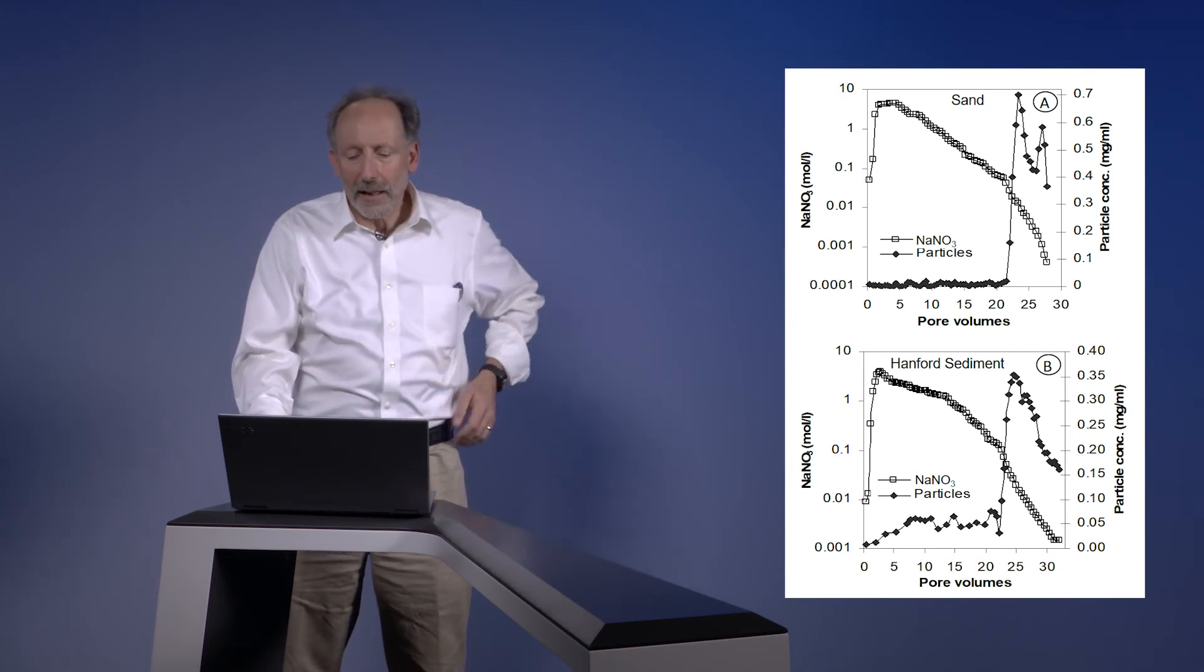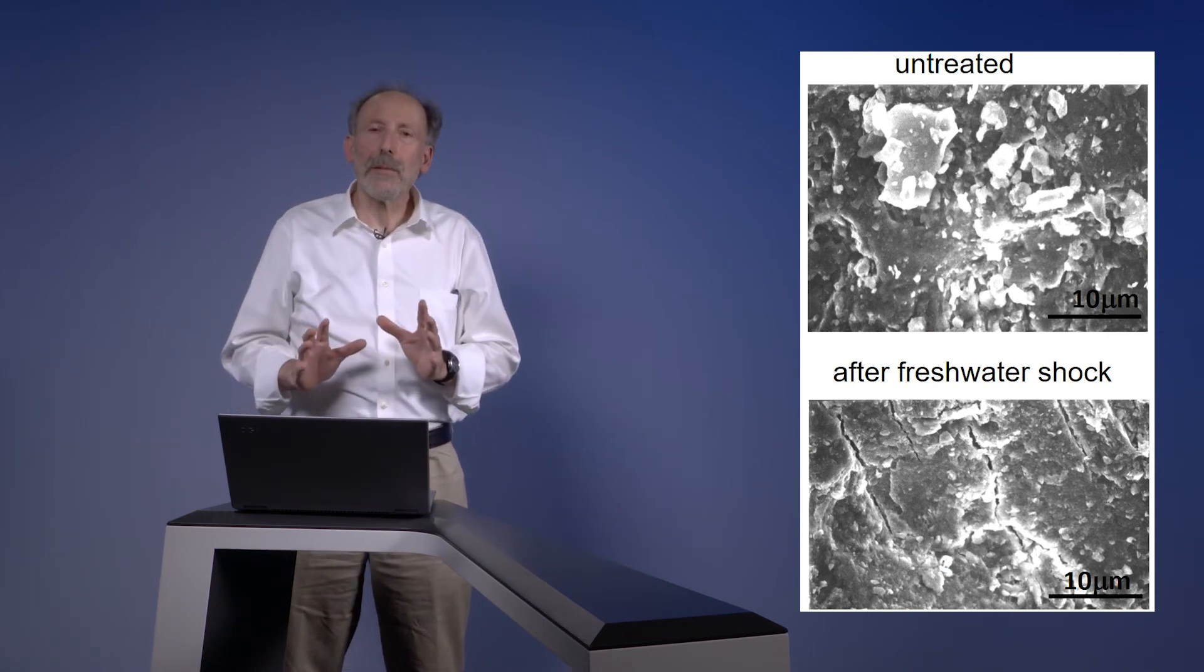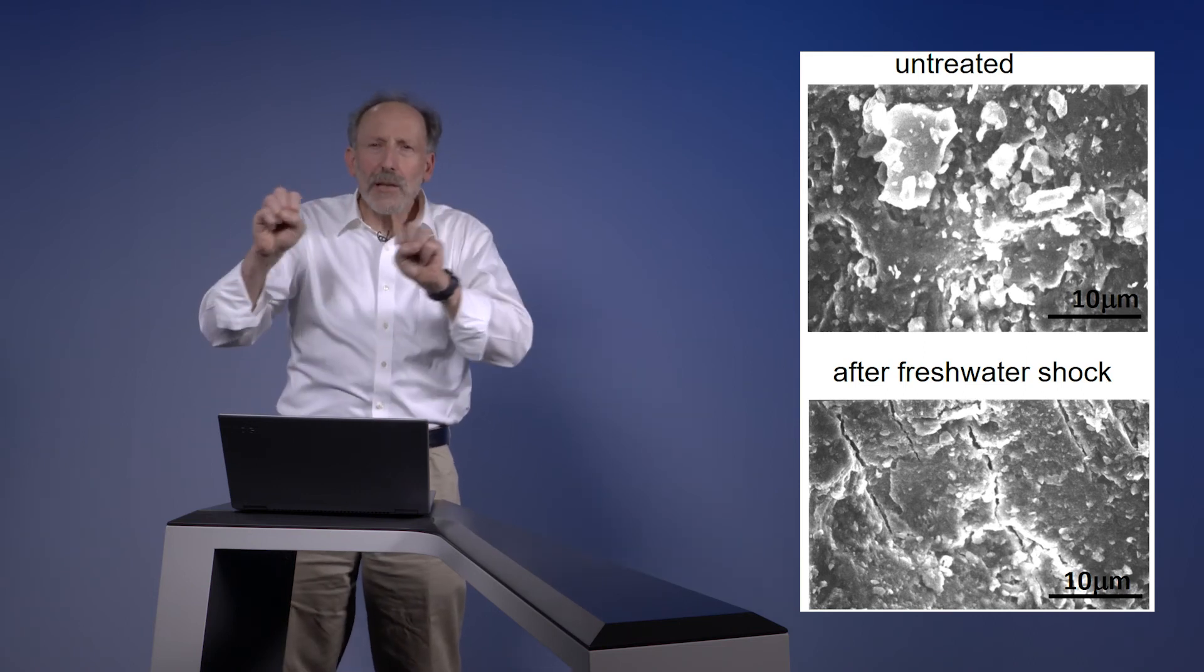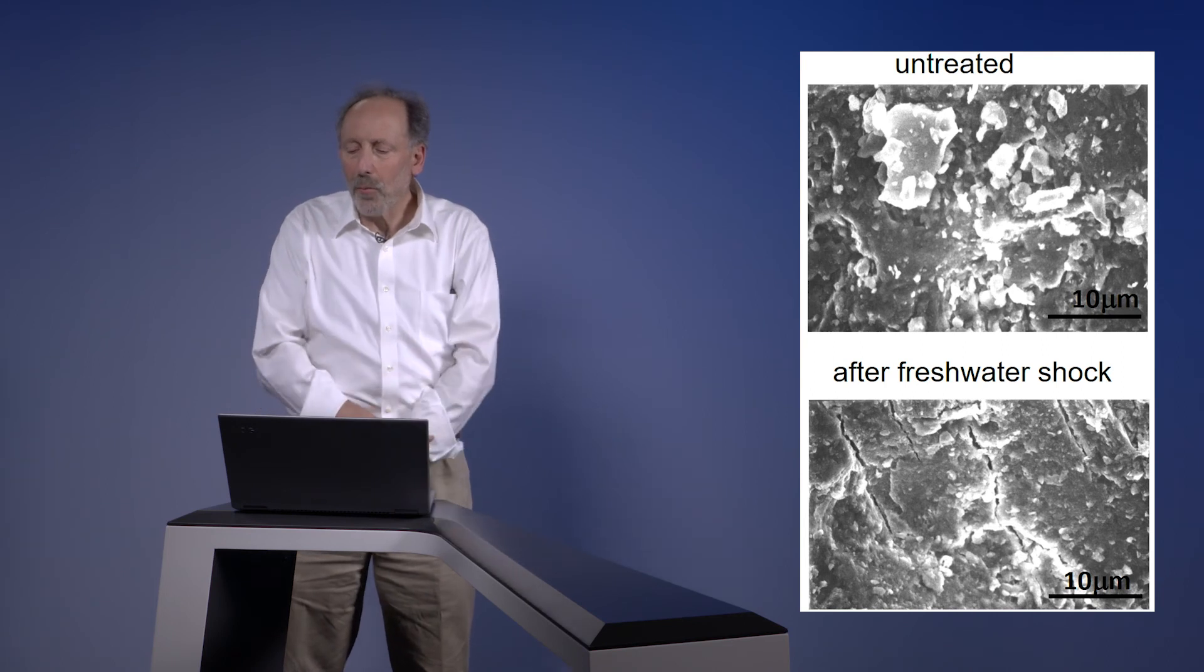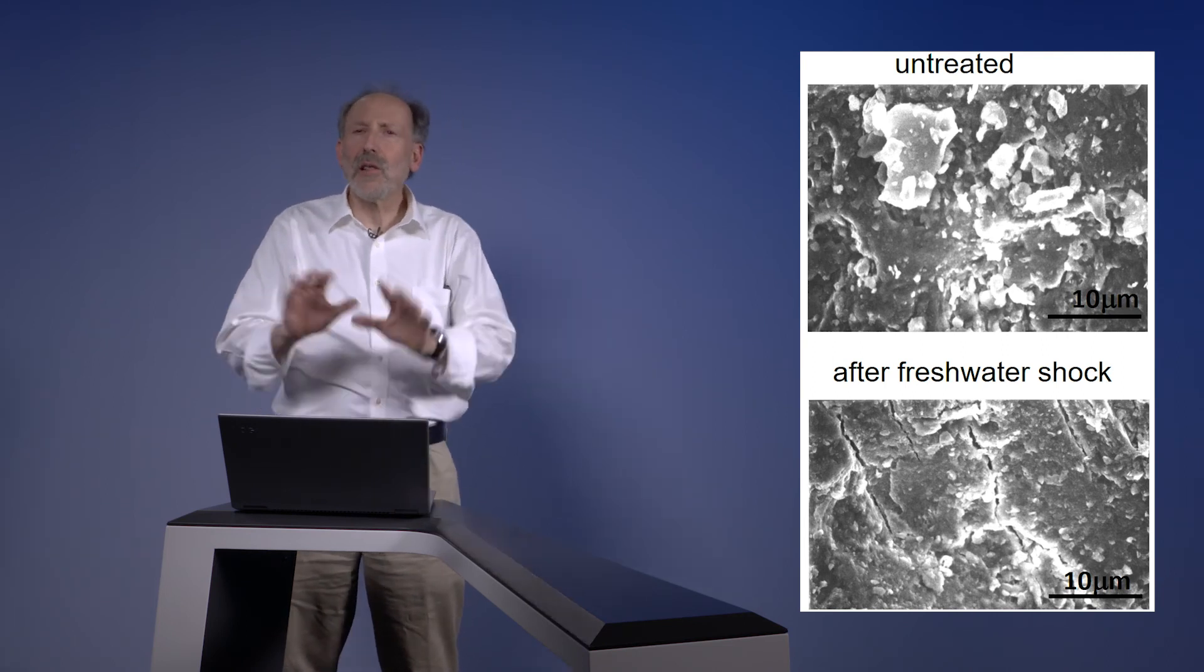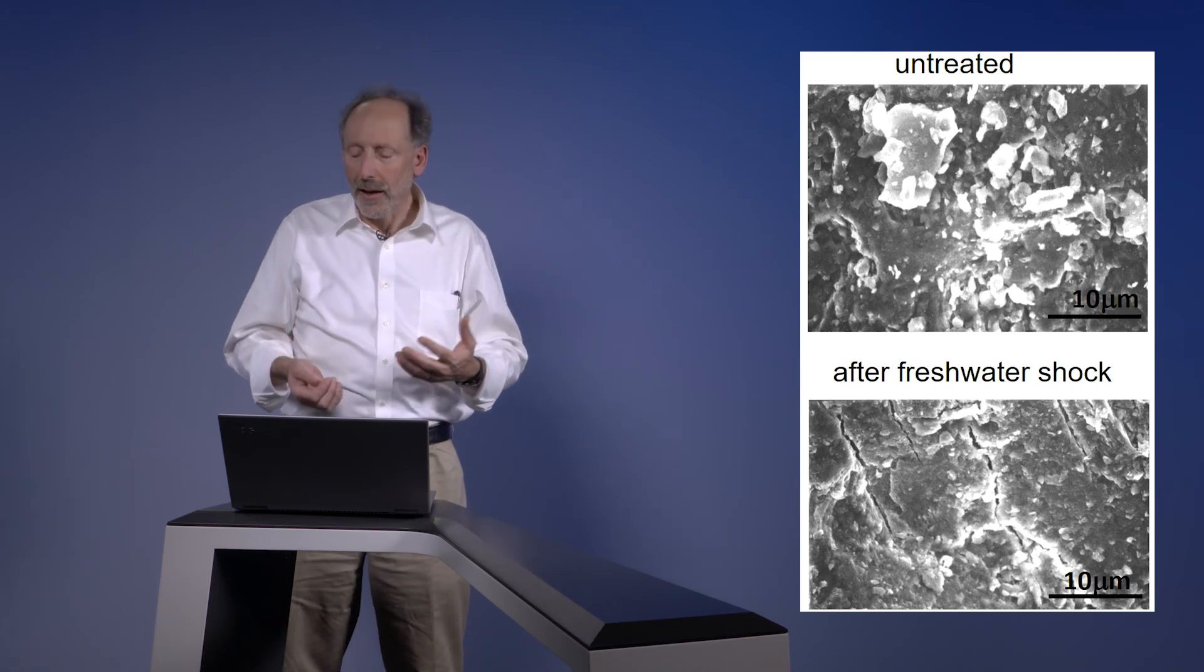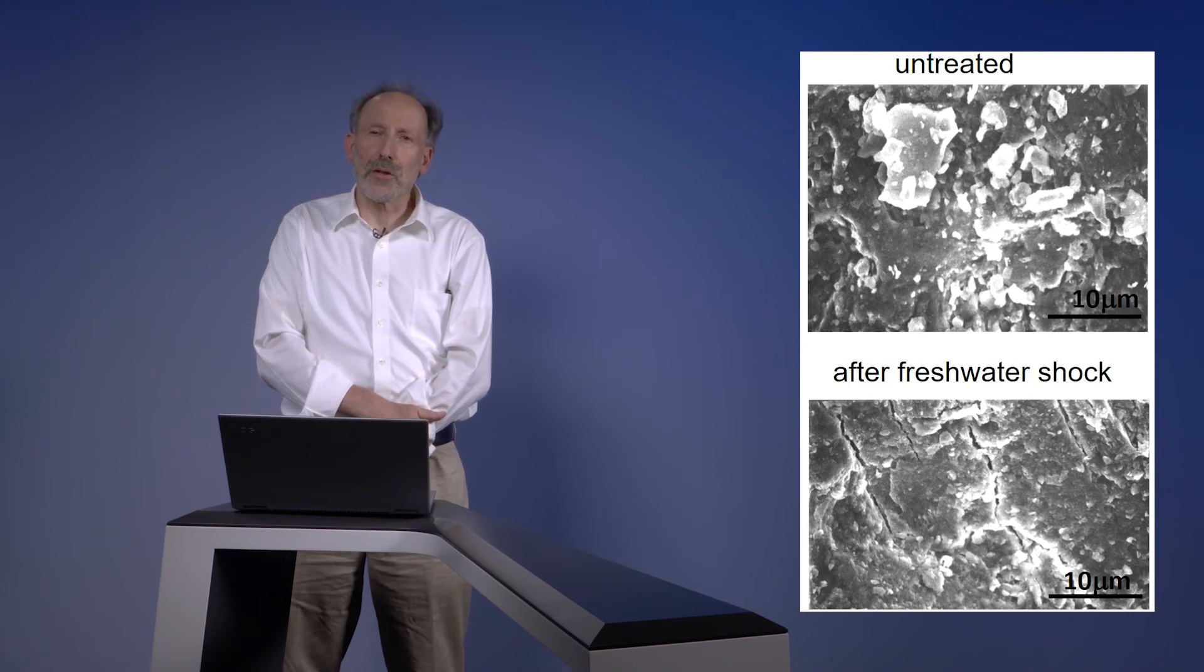We can look at electron microscope pictures of the pre- and post-treatment material and see that before we treated it, there were all these small particles bound to the mineral surfaces. At the 1 to 10 micron scale, lots of colloidal particles prior to that freshwater shock. When the freshwater shock came, it knocked almost all those particles off.